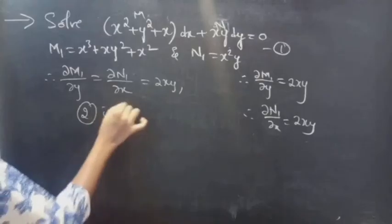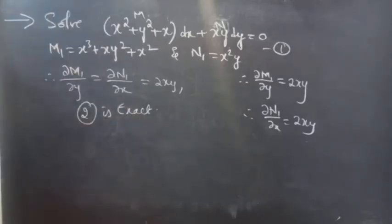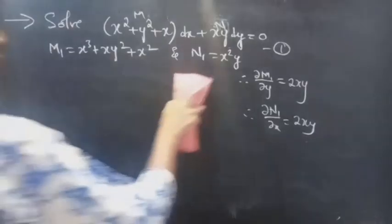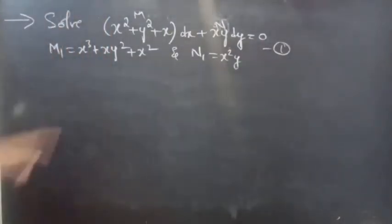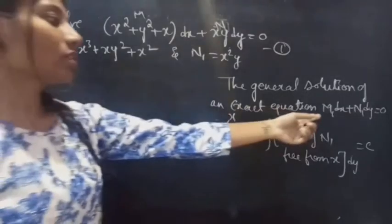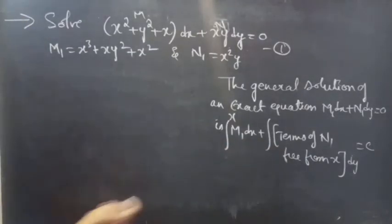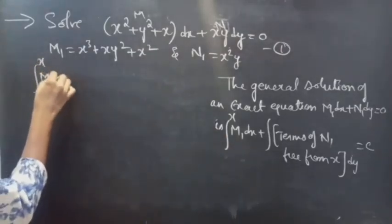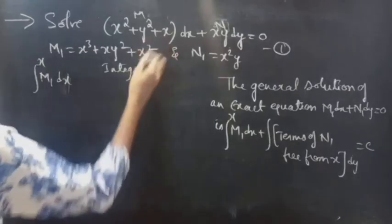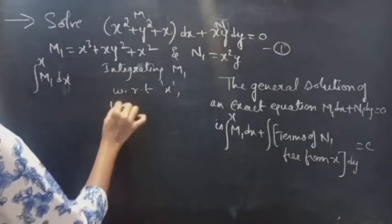From this we can say that equation 2 is exact — that is, the equation obtained by multiplying the integrating factor to the given equation is an exact equation. So now we need to find the general solution. The general solution of equation 2 will be the general solution of equation 1. The general solution of an exact equation in M1 dx plus N1 dy equals 0 form is given by: integral over x of M1 dx plus integral of terms of N1 free from x dy equals c. So the first integral is the integral of M1 with respect to x treating y as constant.